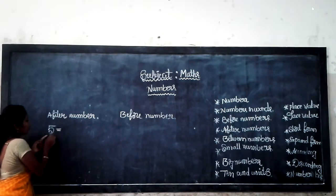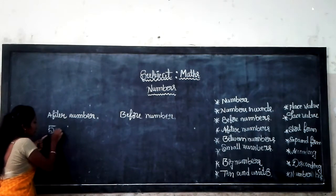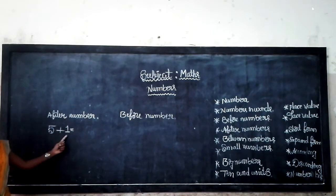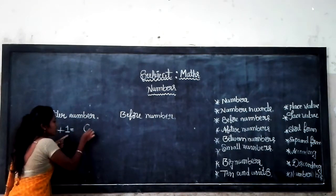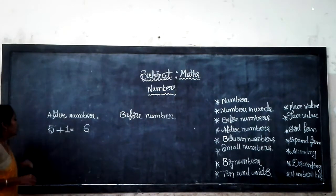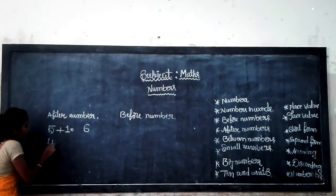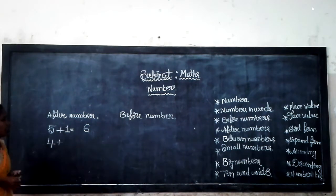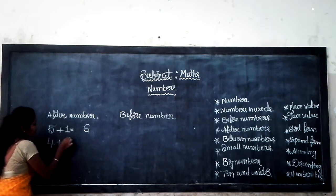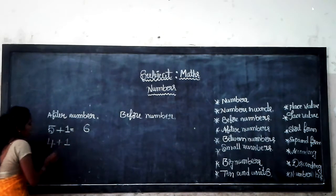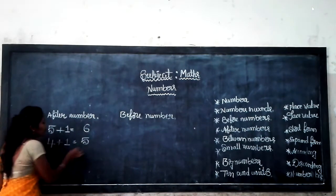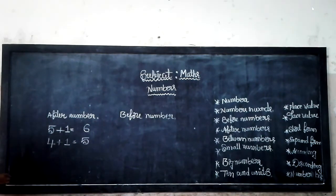Shall we do this? 5 plus 1 is 6. It is easy to get the after number, isn't it? Yes. I will give you another number — 4. After number of 4: you add 1, so 4 plus 1 is equal to 5. Yes.